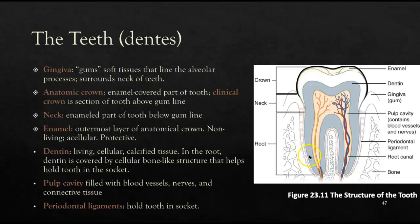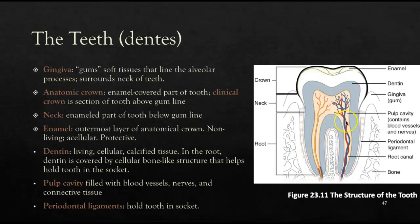Below the enamel is the dentin, a living, cellular, calcified tissue that extends down into the root of the tooth. It is covered by bone-like cellular structures that hold the tooth in its socket — a joint called the gomphosis. The pulp cavity is filled with blood vessels and nerves, surrounded by connective tissue. The periodontal ligaments are bands that hold the tooth in the socket, and these are gradually broken when deciduous teeth fall out to make way for permanent teeth.